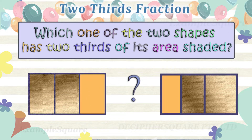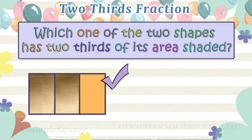Which one of the two shapes has two-thirds of its area shaded? This shape has two-thirds of its area shaded.